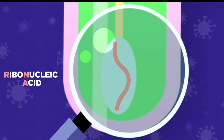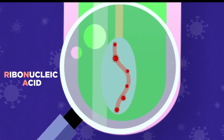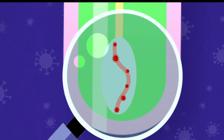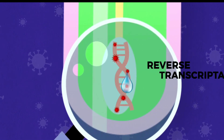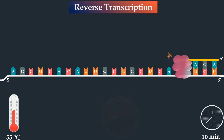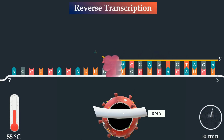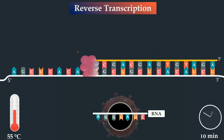Once a sample is collected, RNA is extracted and treated with reverse transcriptase enzyme. In this way, a complementary DNA is obtained from the initial RNA.